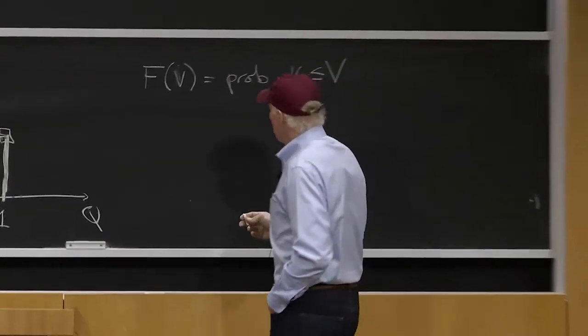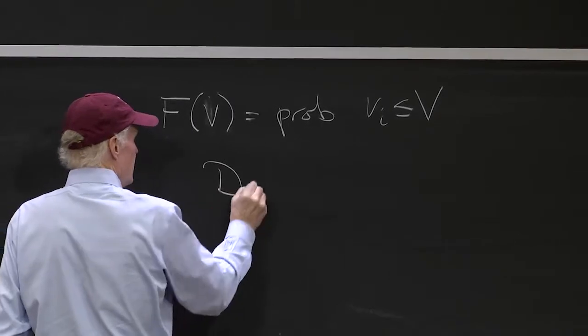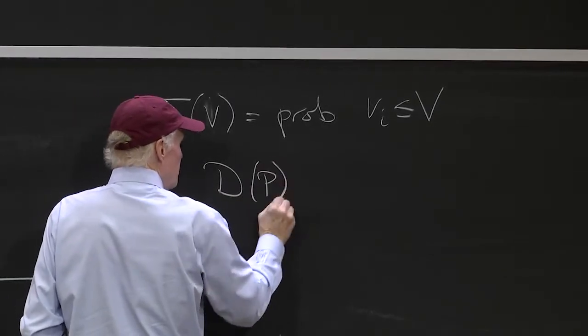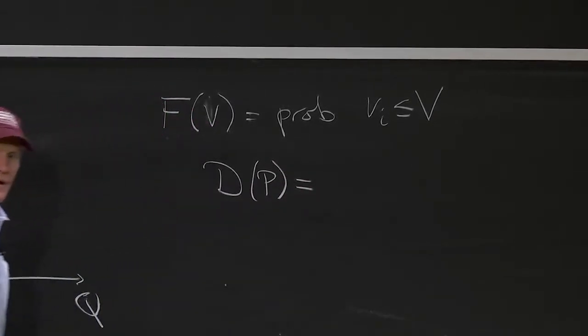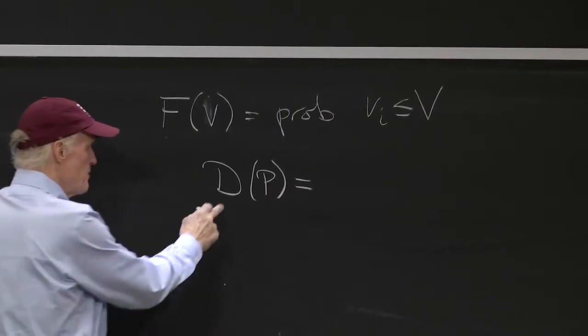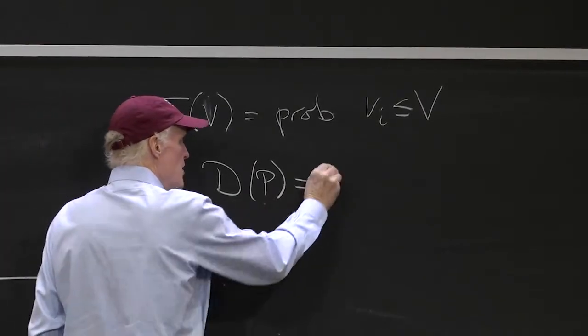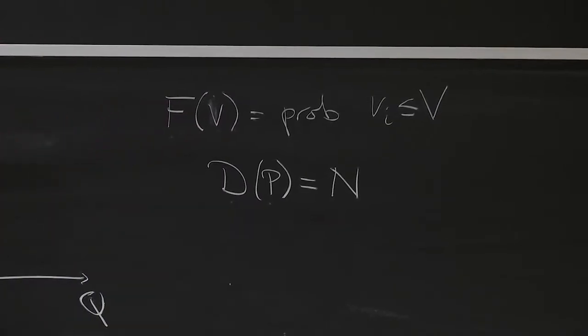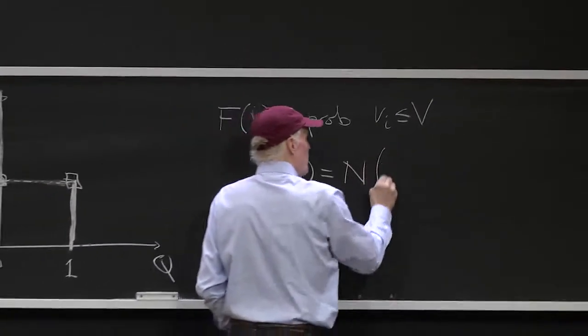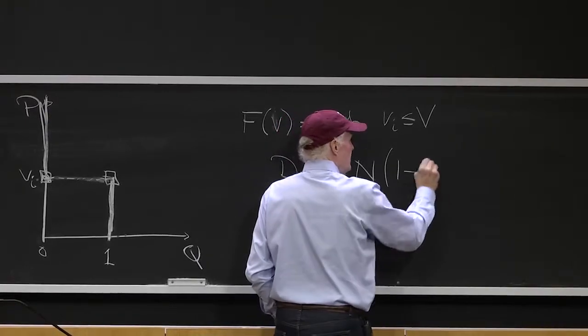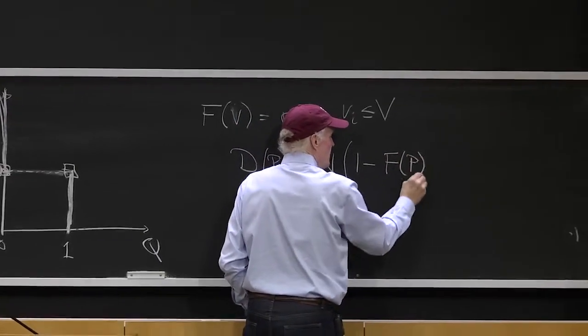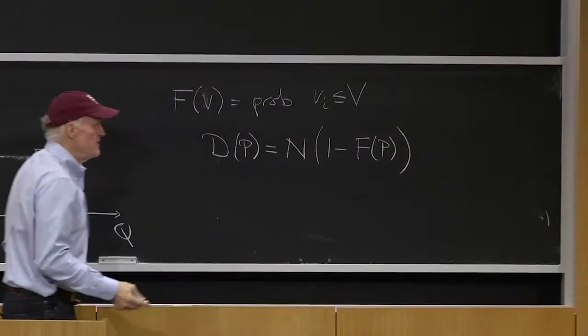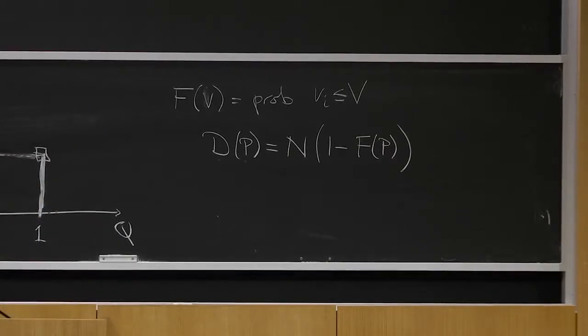So the demand D(p) would be equal to what? Well, D(p), the amount that would be demanded at price p, would be the number of people in the population times 1 minus F(p). Because everybody who has a v bigger than or equal to p is going to buy.